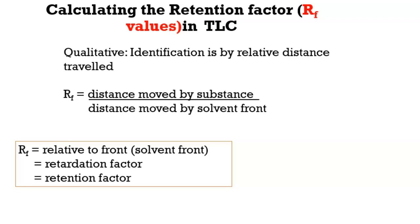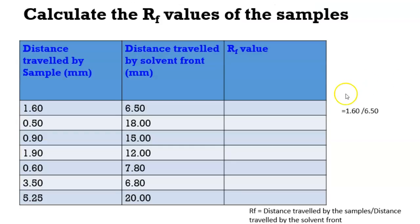In this short video I will be demonstrating how you can calculate the retention factor. The retention factor is the distance traveled by the substance relative to the distance moved by the solvent front. After carrying out your TLC (thin layer chromatography) experiment, you use your chromatogram data: simply divide the distance moved by the substance by the distance moved by the solvent front.